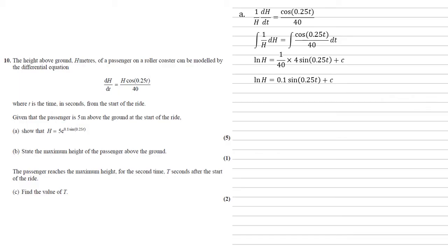Simplifying that gives us ln h equals 0.1 sin 0.25t plus c. Now if we look at what we're aiming for, this is looking good. We've got the 0.1 sin 0.25t, so that's a good start, but we need to work out what c is. We've been given that the passenger is 5 meters above the ground at the start of the ride, so t equals 0, h equals 5. Putting this into our equation gives us ln 5 equals 0.1 sin 0 plus c. Well, sin 0 is equal to 0, so c equals ln 5.